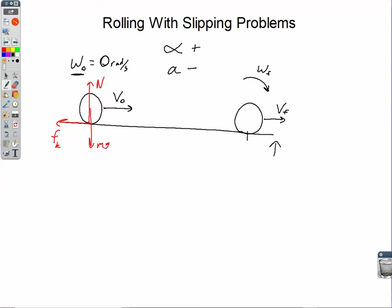Like we have done many times in the past, we're going to write net torque equals I times alpha, and net force equals M times A. We'll assume this bowling ball has a mass M and radius R. It is a solid sphere, so I for a solid sphere from a table is two-fifths MR².